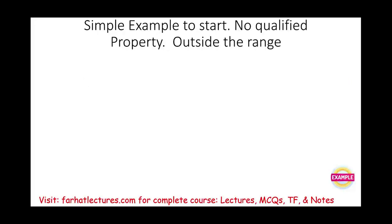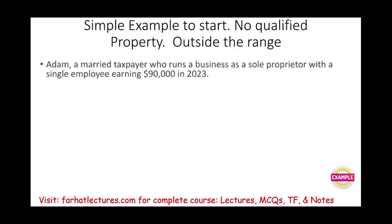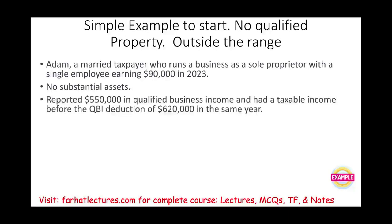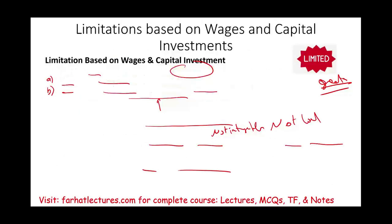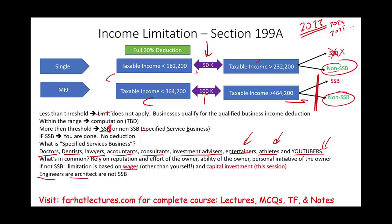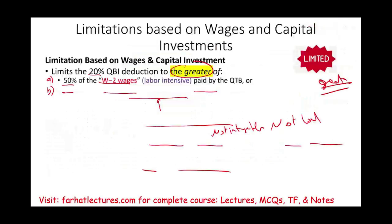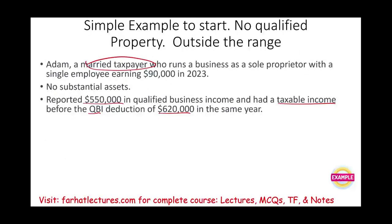The best way to work this is to start with a simple example. Adam is a married taxpayer who runs a business as a sole proprietorship with a single employee earning $90,000 in 2023. Adam has no assets, so it's a labor-intensive company. They reported $550,000 in qualified business income, and their taxable income before QBI is $620,000. Adam is above the $464,200 limitation for married filing jointly, but we'll assume Adam is a non-SSB.